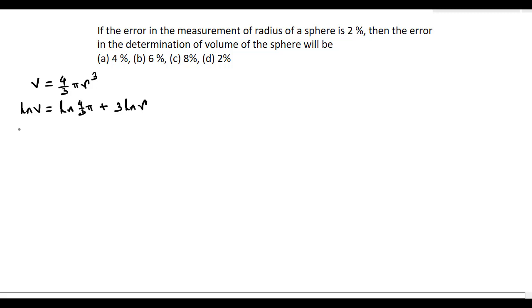Now, if we differentiate this equation, then we can find dV by V is equal to 0, the derivative of 4 by 3 pi is 0 because 4 by 3 pi is constant. Now, the derivative of ln r is dr by r.